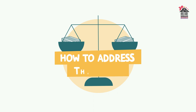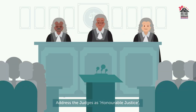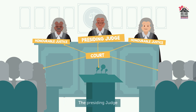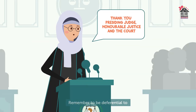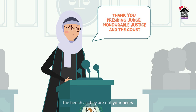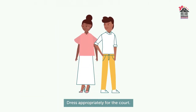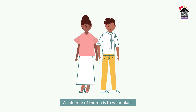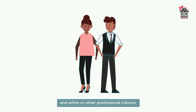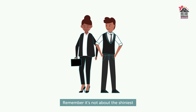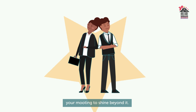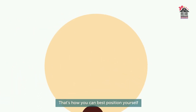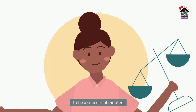How to address the court. Address the judges as 'Honorable Justice' and the full bench as 'the court.' The presiding judge should be referred to as 'presiding judge.' Remember to be deferential to the bench, as they are not your peers. Dress appropriately for the court — a safe rule of thumb is to wear black and white or other professional colours. Remember, it's not about the shiniest suit, but the one that allows your mooting to shine beyond it. That's how you can best position yourself to be a successful mooter.